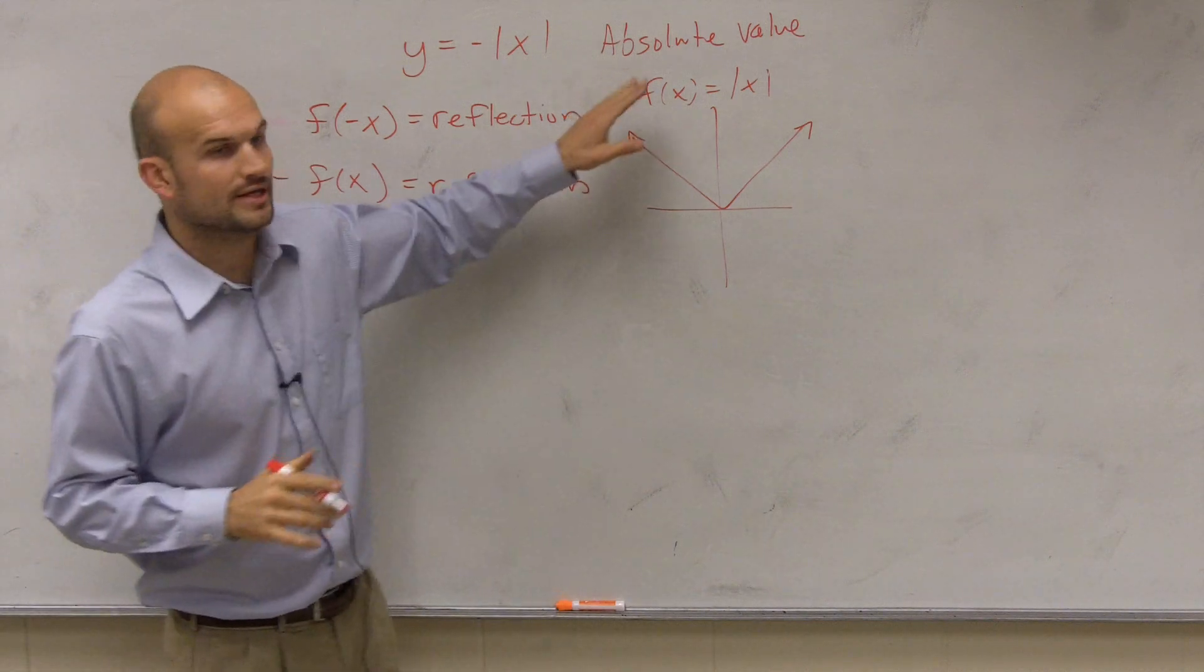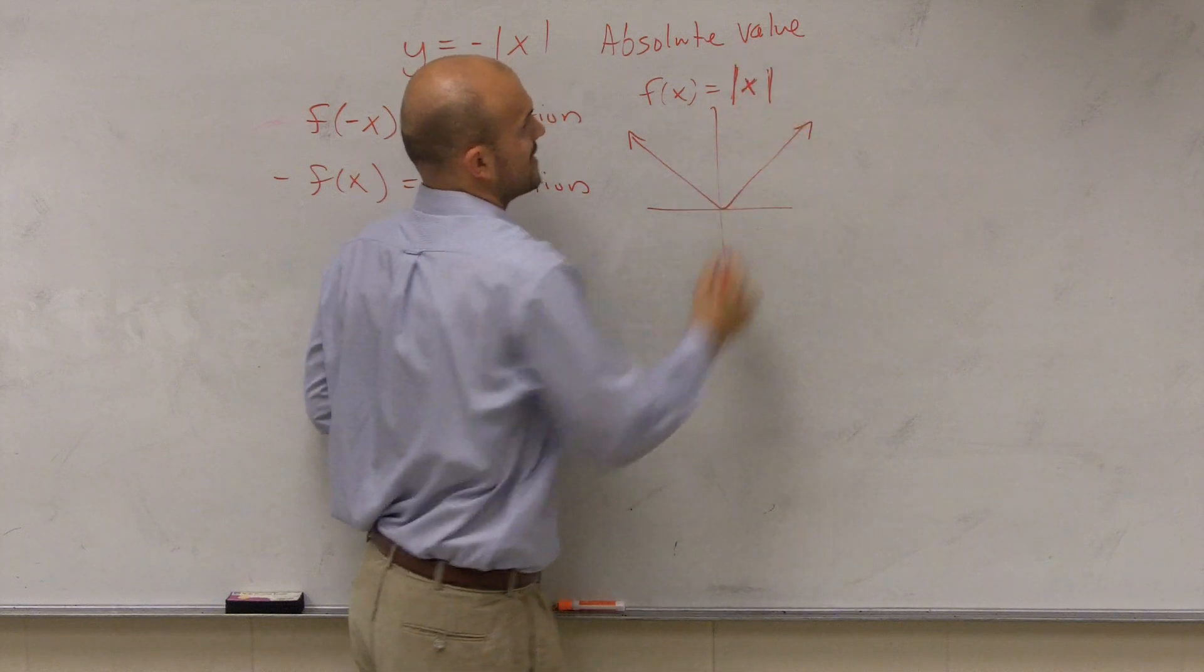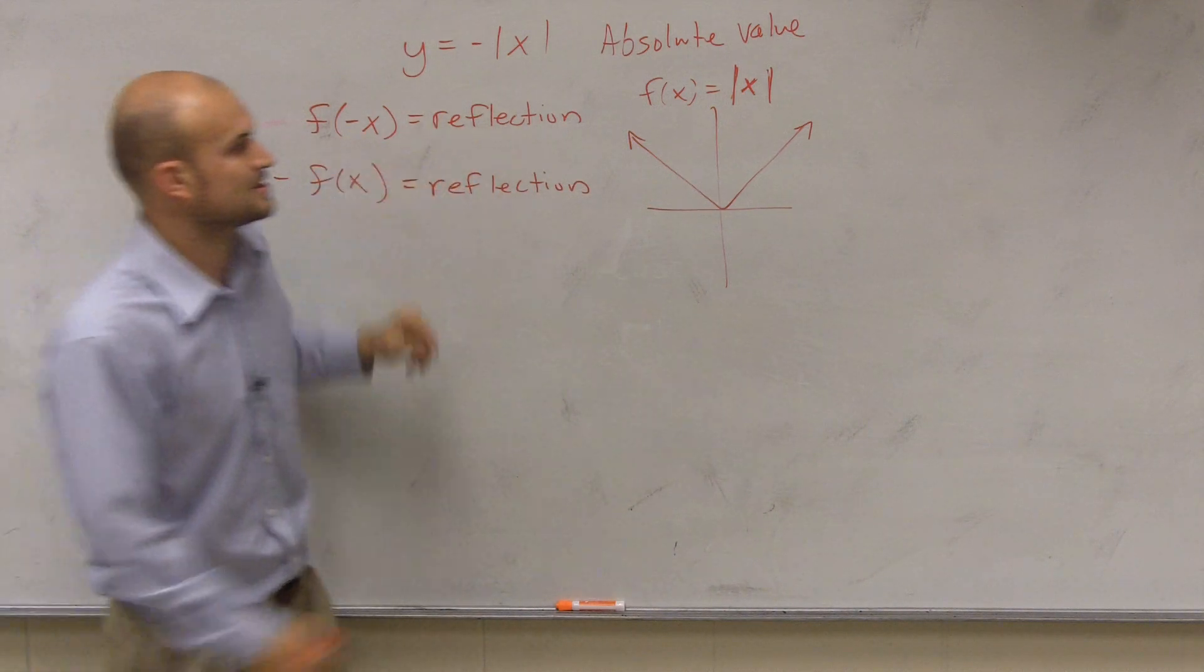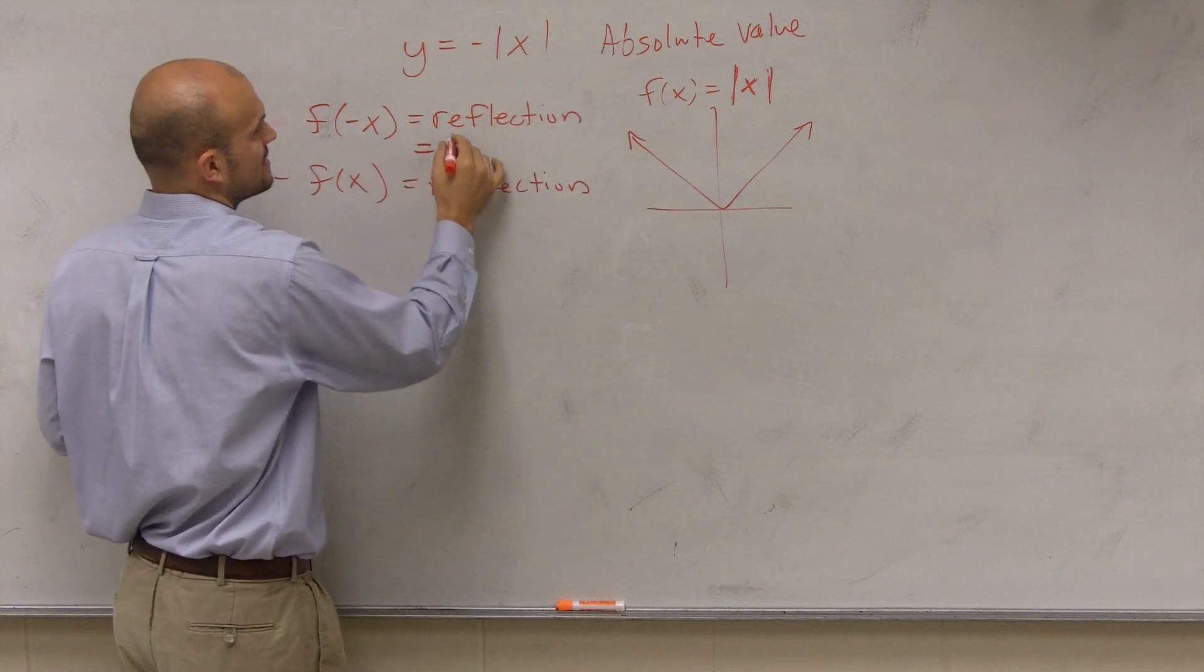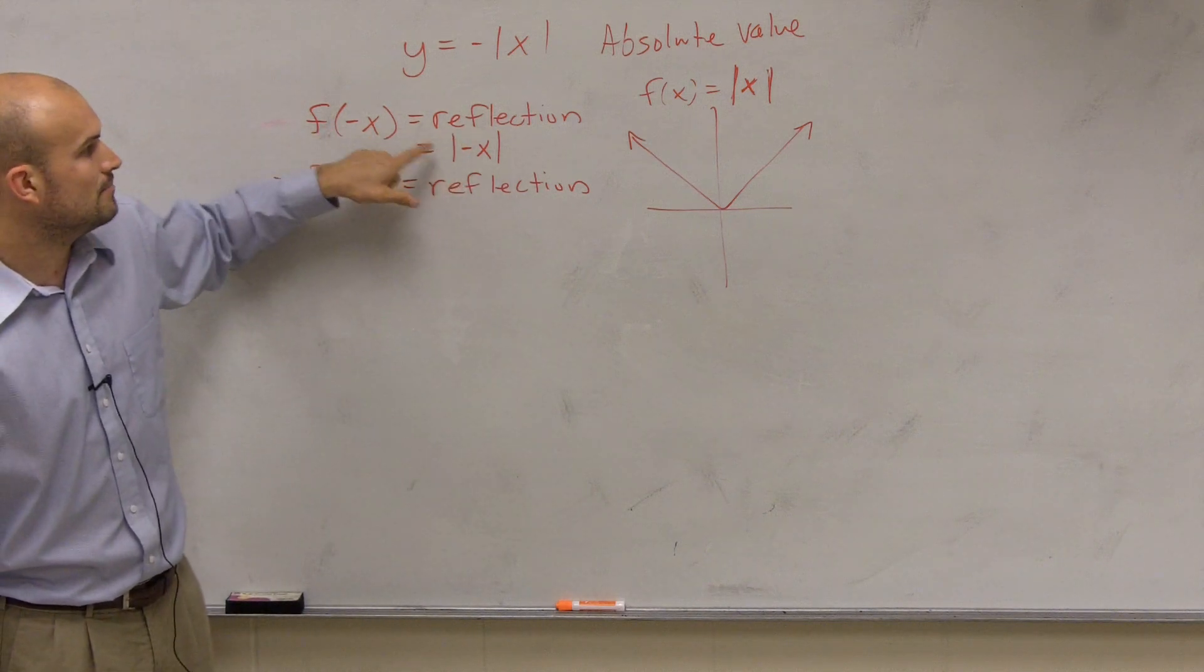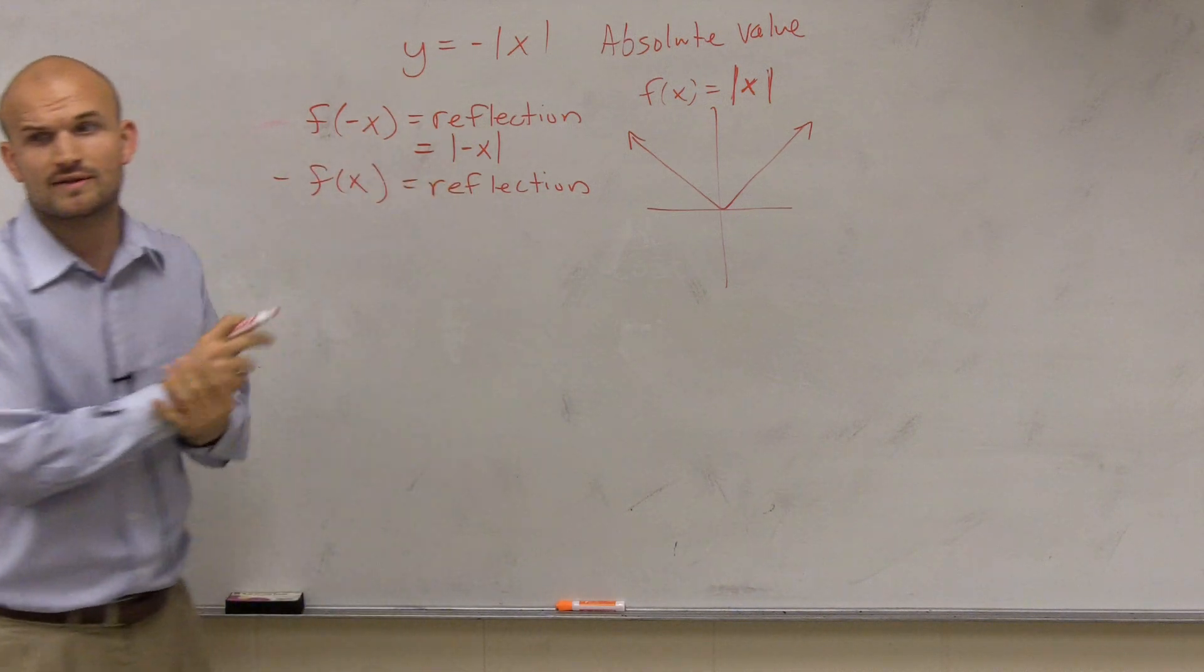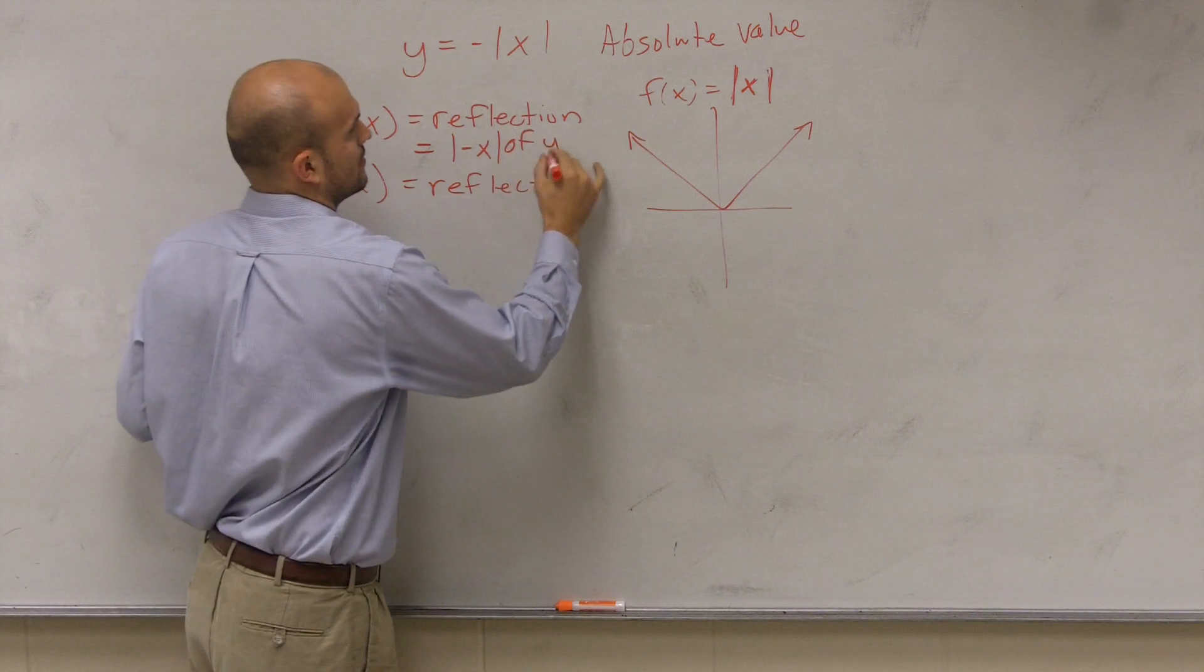That is going to also be a reflection, but they're going to be of different types. Let's take a look at here, what's our function? What's the absolute value function? y equals absolute value of x. That is the function. So if I multiply negative x inside my function, it would look like absolute value of negative x. So when you multiply by a negative inside your function, it is a reflection about the y-axis.